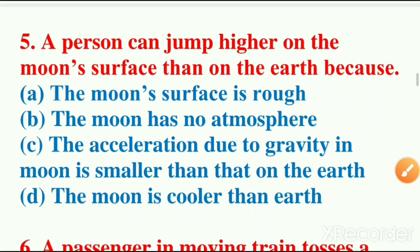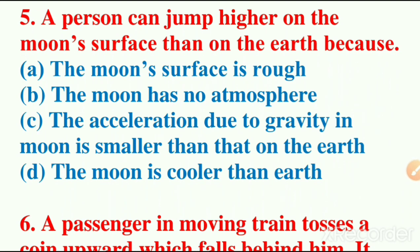Fifth question: a person can jump higher on the moon surface than on the Earth surface because? Options are: the moon surface is rough, the moon has no atmosphere, the acceleration due to gravity in moon is smaller than that on the Earth, and the fourth option is the moon is cooler than the Earth. So the correct answer is the acceleration due to gravity in the moon is smaller than on the Earth, option C.